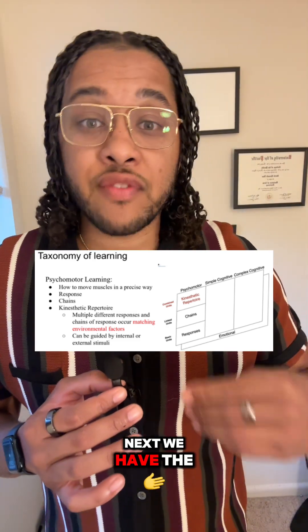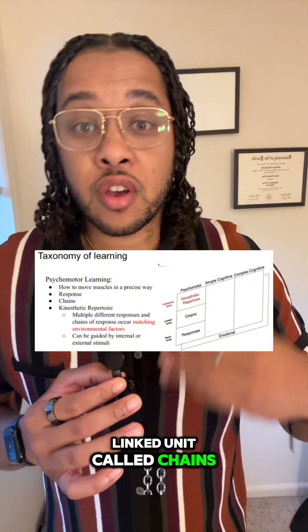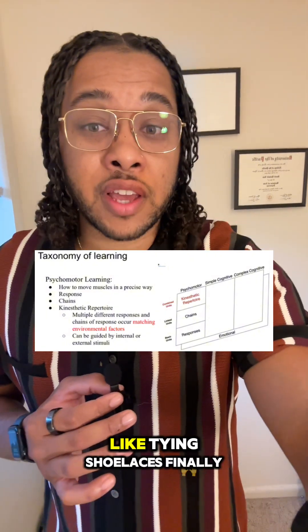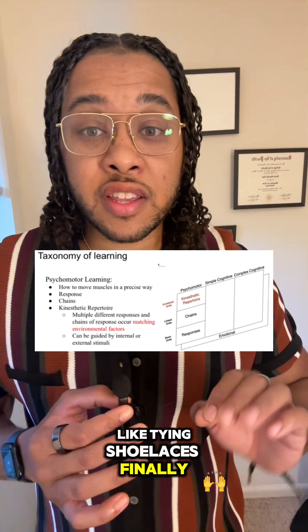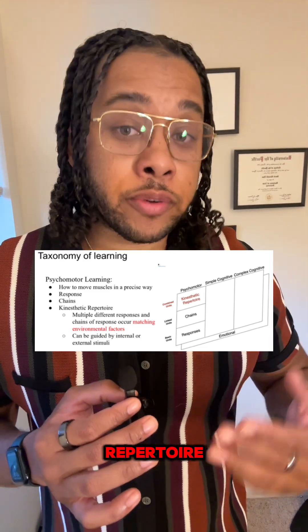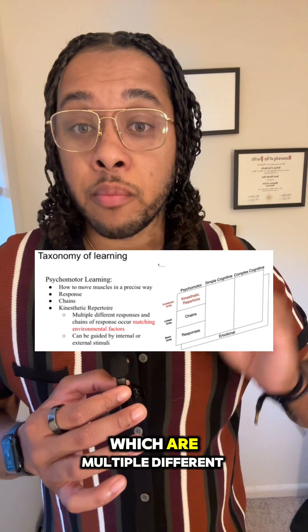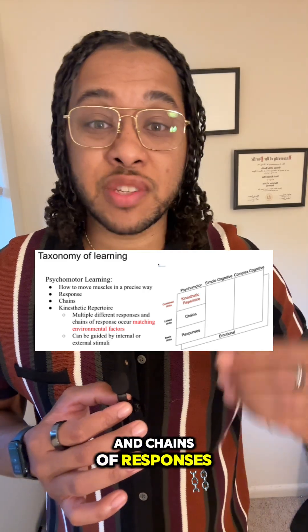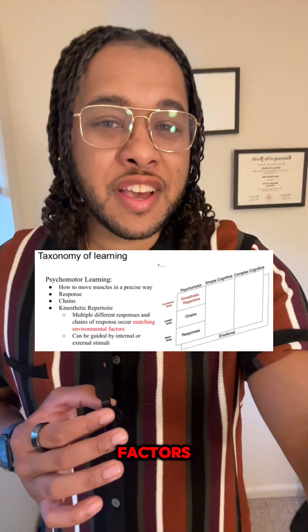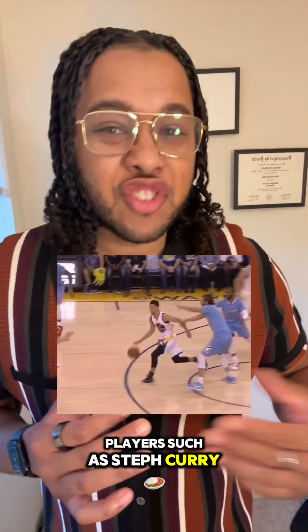Next, we have the linked unit, called chains, where there are multiple responses in a specific order, like tying shoelaces. Finally, in the combined unit, we have the kinesthetic repertoire, which are multiple different responses and chains of responses that occur to match environmental factors — like basketball players such as Steph Curry dribbling around defenders, picking up the ball, and shooting it in their face.